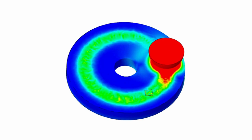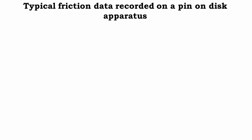In the actual case, in most cases, the pin remains fixed and the disc rotates. As we can see, a wear track has been created on the disc, which is clearly visible.